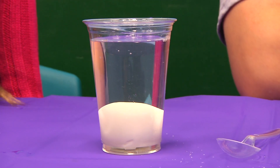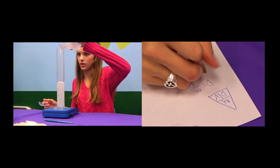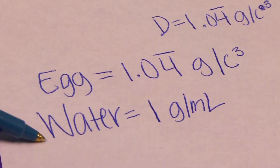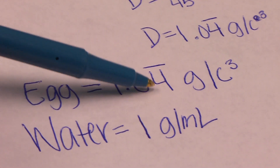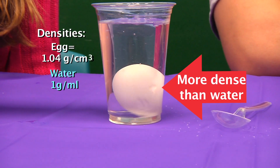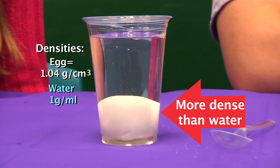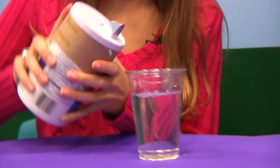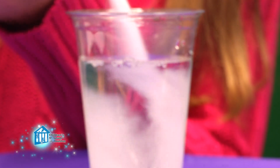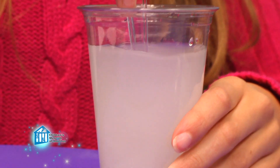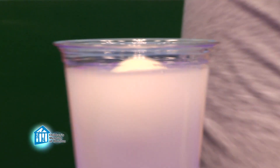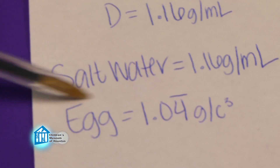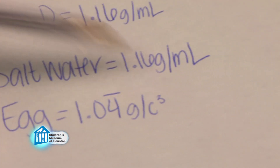Is that because the egg is more dense than the water? Well, let's calculate and find out. The water is 1 gram per milliliter, and the egg is 1.04 grams per centimeter cubed. So the egg is more dense than the water, which is why it sank. Now add in a bunch of salt to your water and stir it to dissolve as much as possible, then put your egg in again. Oh wow — it floats now! So the water is now 1.16 grams per milliliter.